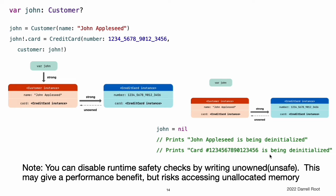Note, these examples show how to use safe unowned references. Swift also provides unsafe unowned references for cases where you need to disable runtime safety checks, for example, for performance reasons. As with all unsafe operations, you take on the responsibility for checking that code for safety. You indicate an unsafe unowned reference by writing unowned(unsafe). If you try to access an unsafe unowned reference after the instance that it refers to is deallocated, your program will try to access the memory location where the instance used to be, which is an unsafe operation.